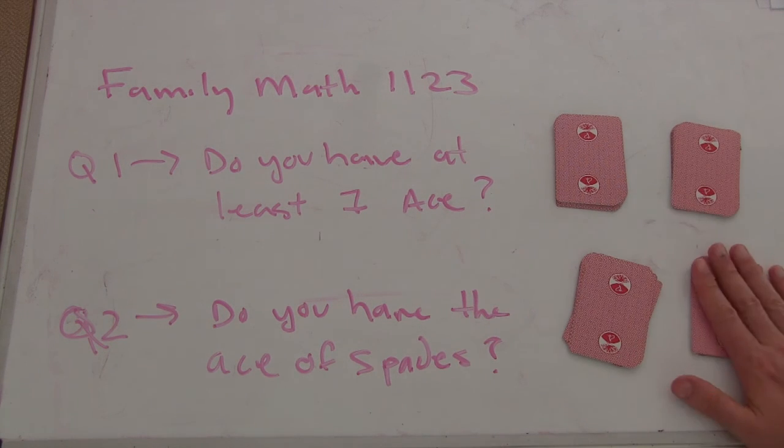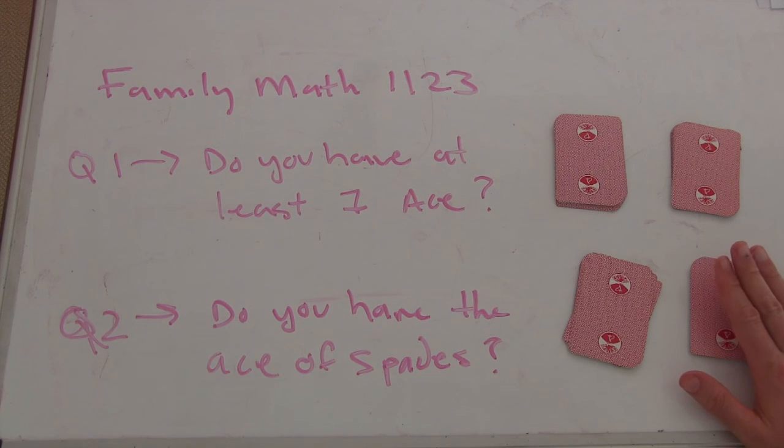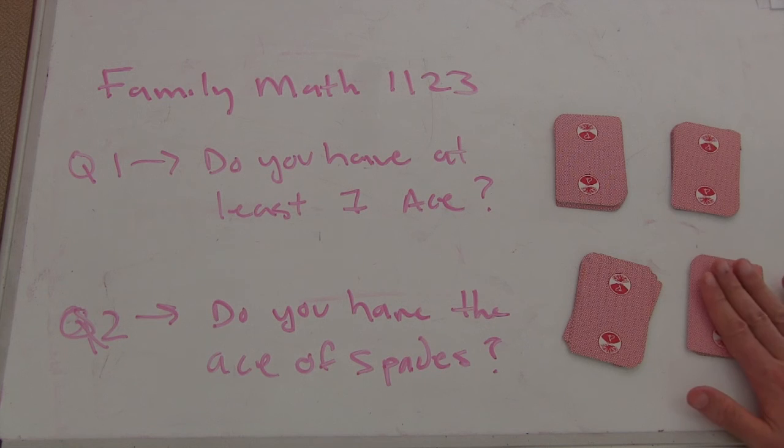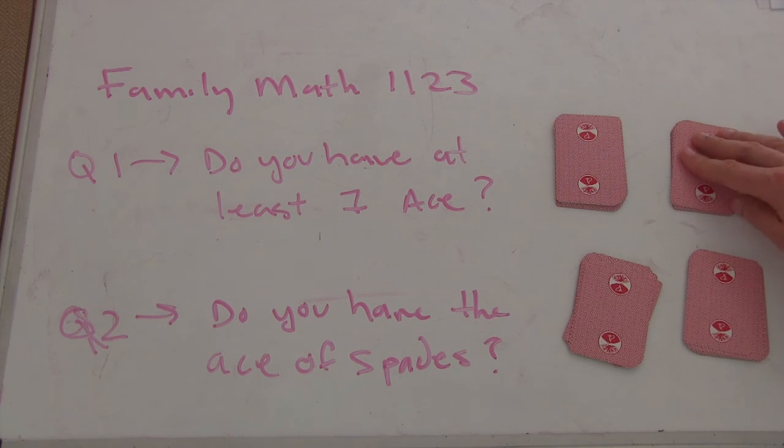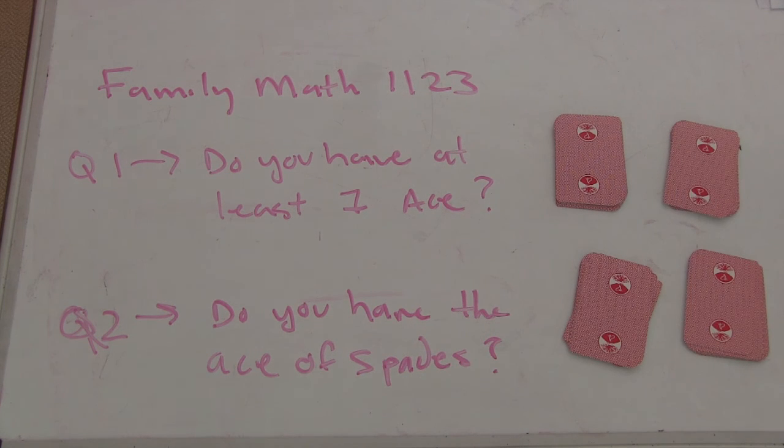Oh, actually no, sorry. This person, the person who had at least one ace, this person did not have more than one. The person who had the ace of spades had more than one, and this person said yes, I have at least one. It's more than one.